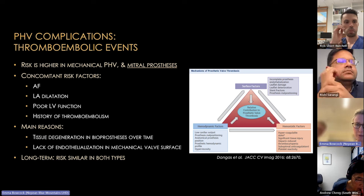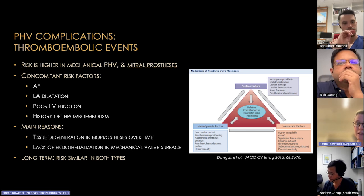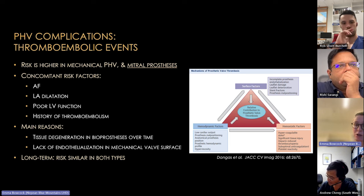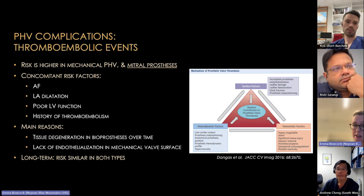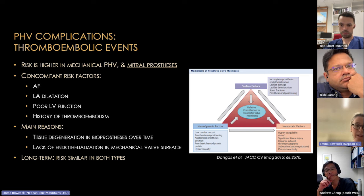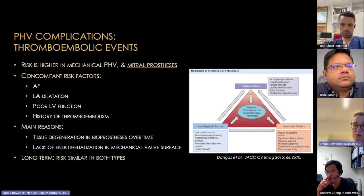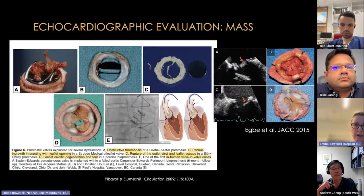Thrombotic complications tend to be more common in mechanical rather than bioprosthetic valves, with the mitral valve most susceptible. Risk factors include atrial fibrillation, large left atrium, and poor LV function — Virchow's triad applies. The main reason is loss of the protective endothelium with its natural fibrinolytic properties, making clot formation more likely.